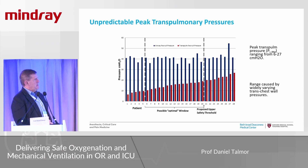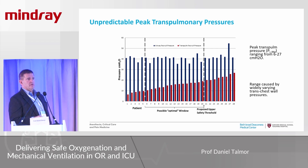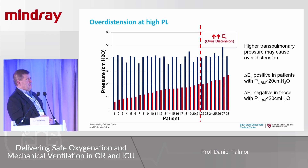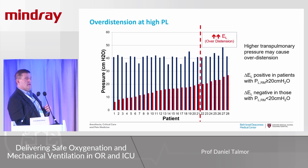Everyone in the study received a recruitment maneuver to 40 centimeters of water, but transpulmonary pressure varied widely across patients. Some patients had very low transpulmonary pressure during the recruitment maneuver — likely inadequate recruitment. Others had transpulmonary pressure greater than 20, where nobody knows the safe level but below 20 is certain. These patients were over-distended, shown by worsening elastance after the recruitment maneuver.